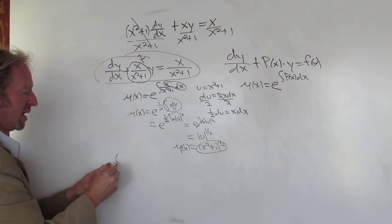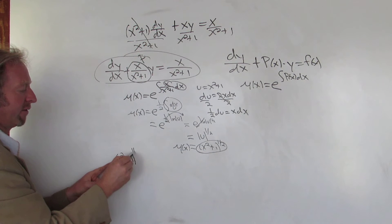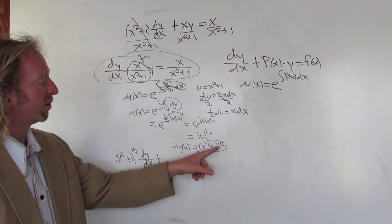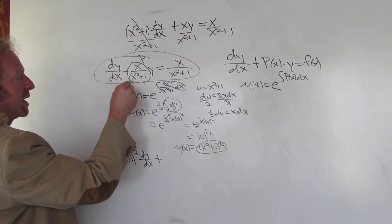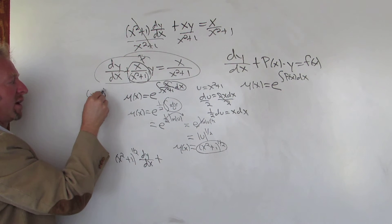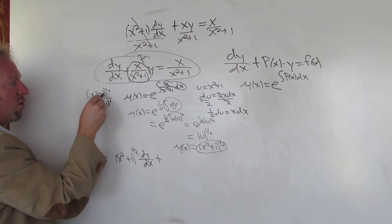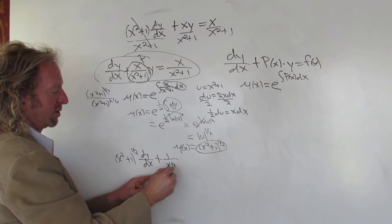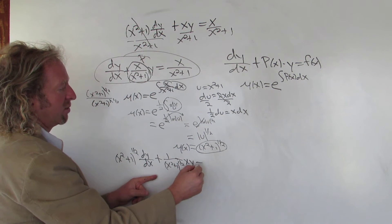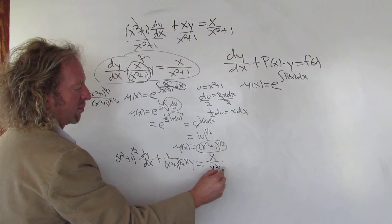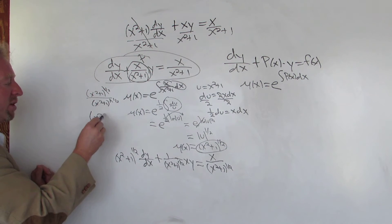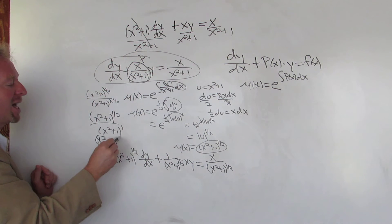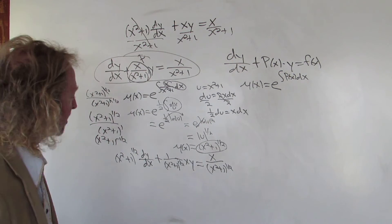Multiplying through by μ(x) = (x²+1)^(1/2): the first term is (x²+1)^(1/2)·dy/dx. For the second term, (x²+1)^(1/2) times x/(x²+1) — since x²+1 to the 1 equals x²+1 to the 1 — we subtract exponents: 1/2 minus 1 gives negative 1/2, so it becomes x/(x²+1)^(1/2)·y. The right-hand side is x/(x²+1)^(1/2).